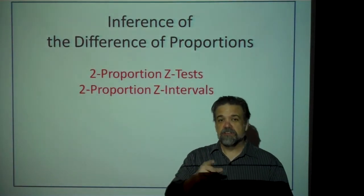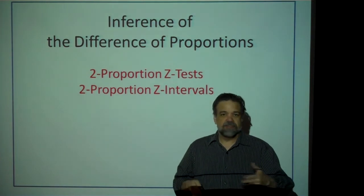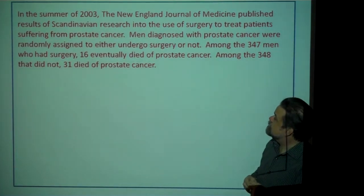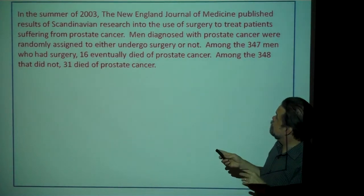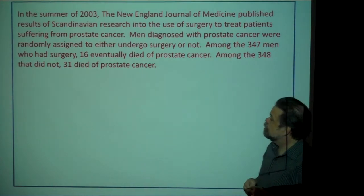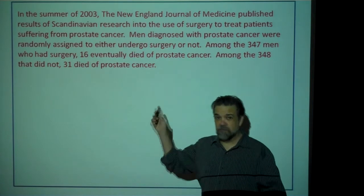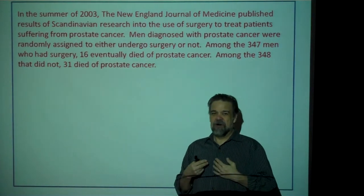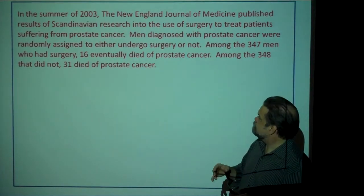Hey stat students, time for another video. This one is going to be over inference for the difference of two proportions. In the summer of 2003, the New England Journal of Medicine published results of Scandinavian research into the use of surgery to treat patients suffering from prostate cancer. Men diagnosed with prostate cancer were randomly assigned to either undergo surgery or not. My first reaction is, if I have prostate cancer and I'm trying to decide whether to have surgery, I'd want to be the one making that decision — not a random assignment. But hey, good for science.